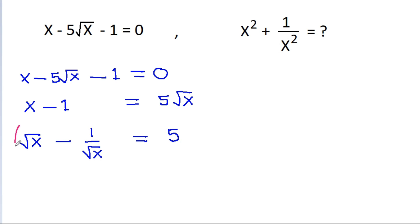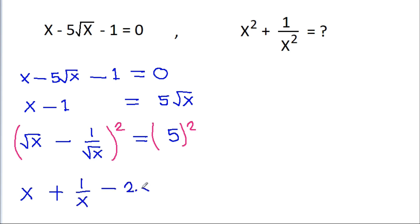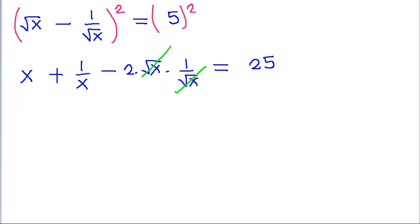And if we square both sides, then root x squared is x, plus 1 by root x squared is 1 by x, minus 2 into root x into 1 by root x is equal to 5 square is 25. And root x will get cancelled, and we get x plus 1 by x is equal to 25 plus 2 is 27.